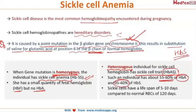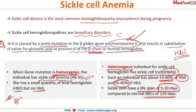Sickle cells have a very short lifespan of 5 to 10 days, compared to the normal RBC lifespan of 120 days. Sickle cell disease is transmitted equally by the male and female.